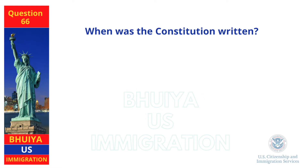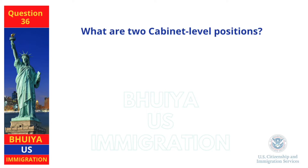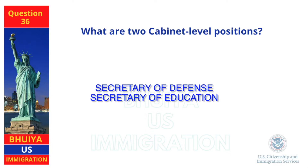When was the Constitution written? 1787. What are two Cabinet-level positions? Secretary of Defense, Secretary of Education.